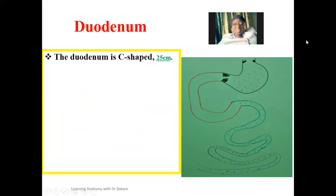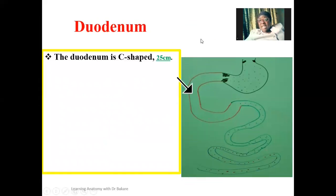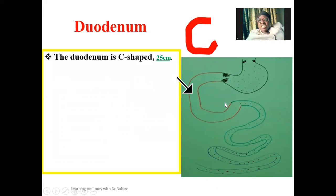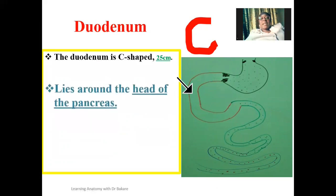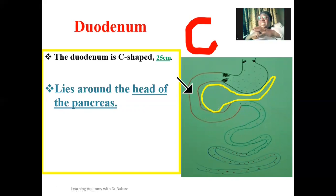The duodenum is a C-shaped region and is about 25 cm in length. This is the duodenum highlighted in red. If you try to extract this region out, this is the kind of presentation that would be seen — a C-shaped configuration. It is C-shaped and you can see it lining around the head of the pancreas. This is the pancreas highlighted in yellow. The pancreas has a head, and you can see the duodenum curving around it.